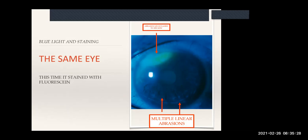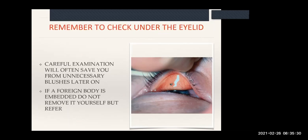Checking under the eyelid is critical. It's embarrassing when you send the patient to the ophthalmologist and they phone you back five minutes later saying there's a huge foreign body under the eyelid. Anybody can invert an eyelid - you put something small against the lid and you invert it and have a look underneath. It will often tell you if something's going on.